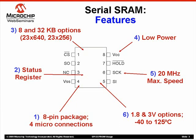Second, the device's status register allows engineers to use the parts in byte, page, or full-chip sequential mode. We will talk more about these modes in the status register section of this seminar. Third, the devices come in two density options, 8 and 32 kbytes, which gives designers a simple way to add extra RAM to an application.